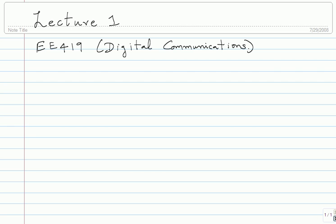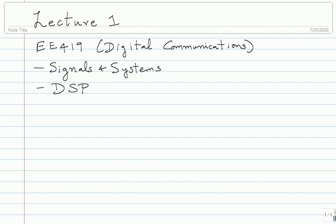The first prerequisite is Signals and Systems — I don't know the course number, it might be called Network Systems. The second is Digital Signal Processing, which is Analog and Digital Signal Processing depending on who teaches it. The third is Probability and Random Processes. So these are the three prerequisites I will assume.